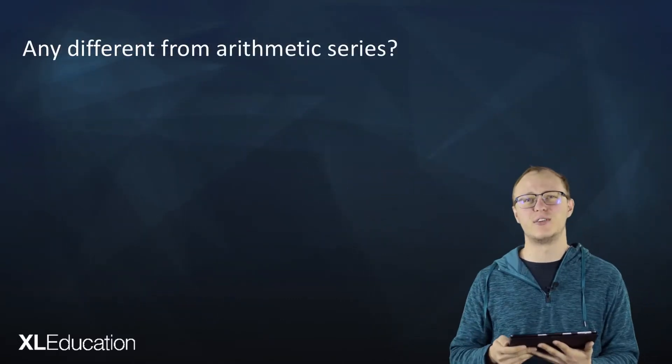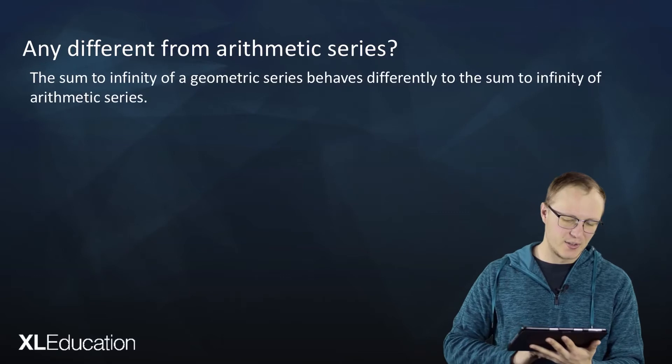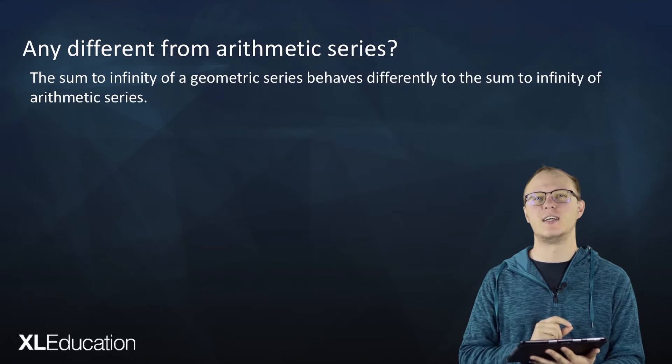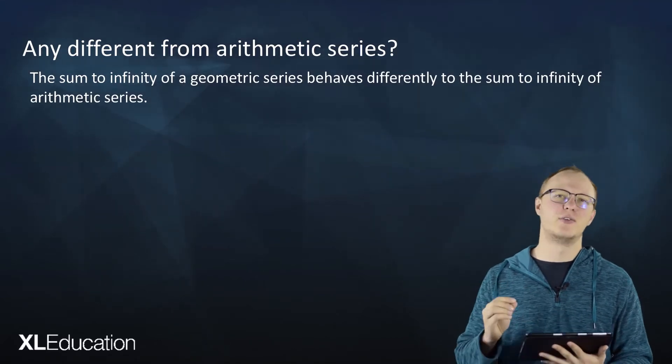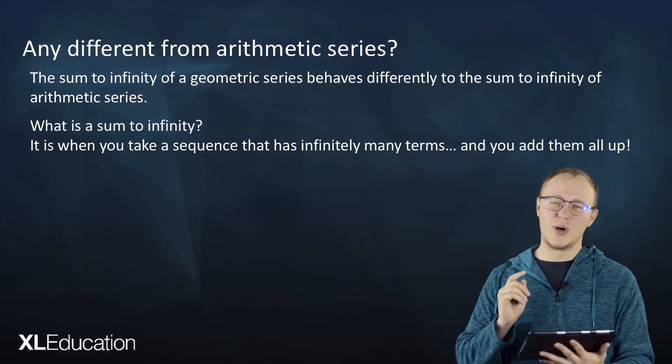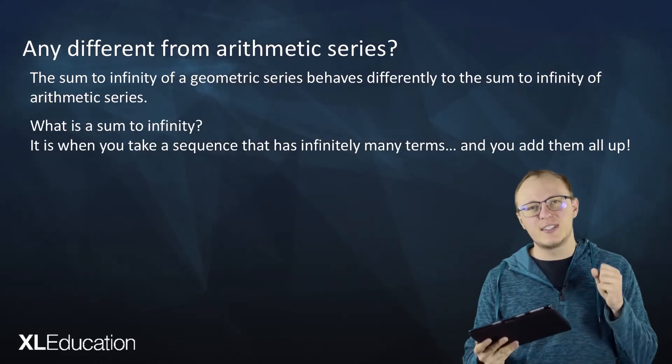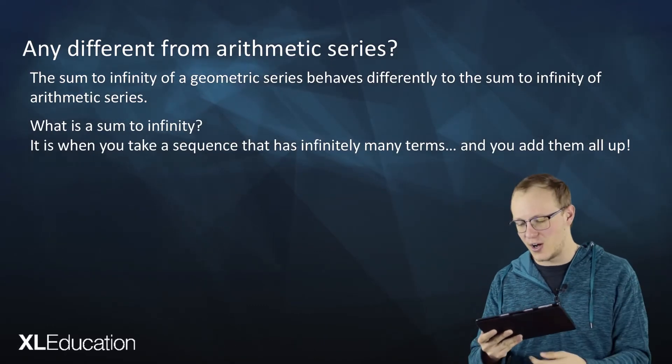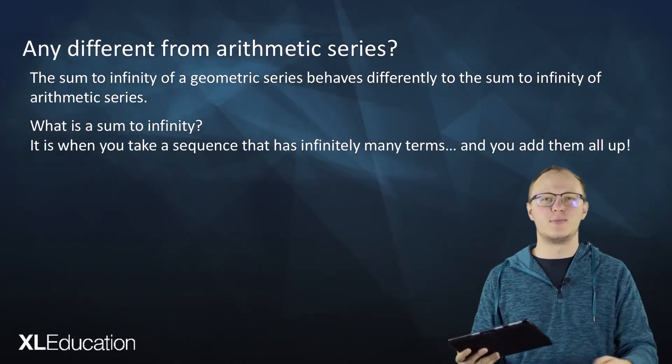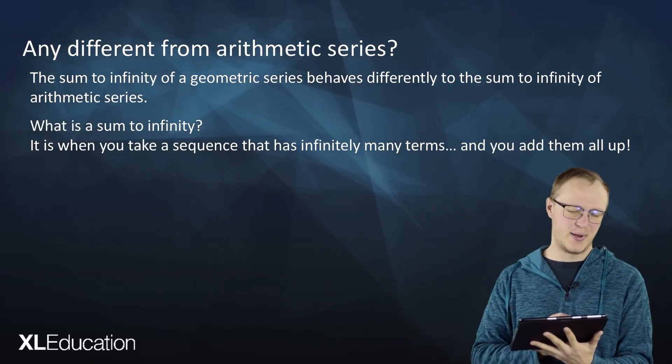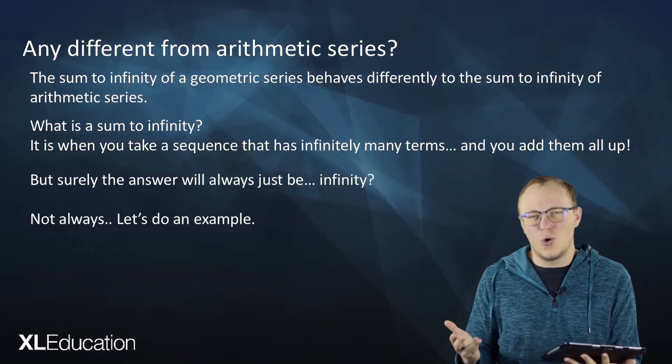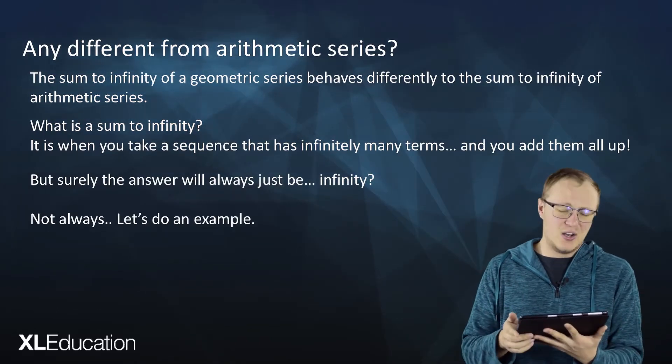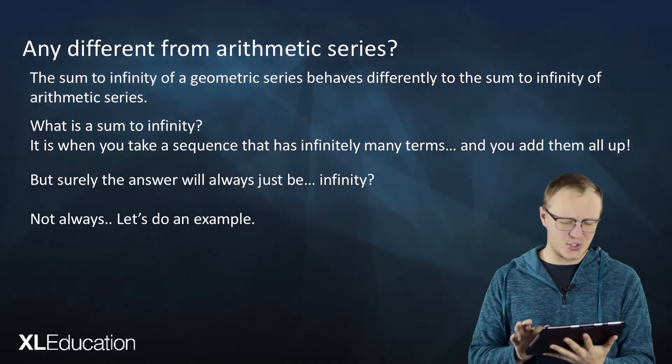Is this any different from arithmetic series? The sum to infinity of a geometric series behaves differently to the sum to infinity of an arithmetic series. What is a sum to infinity? It's when you take a sequence that has infinitely many terms, it goes on and on, and you add them all up. But surely the answer will always just be infinity if you add up infinitely many things? Well, not always. Let's do an example.